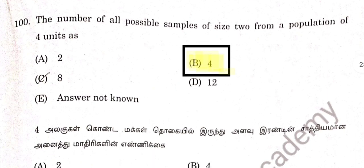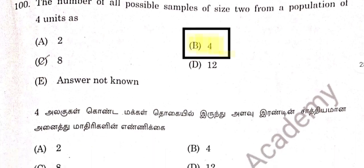Question 99 or 100: The number of all samples of size 2 from a population of 4 units — option B — is 4C2 equals 6.